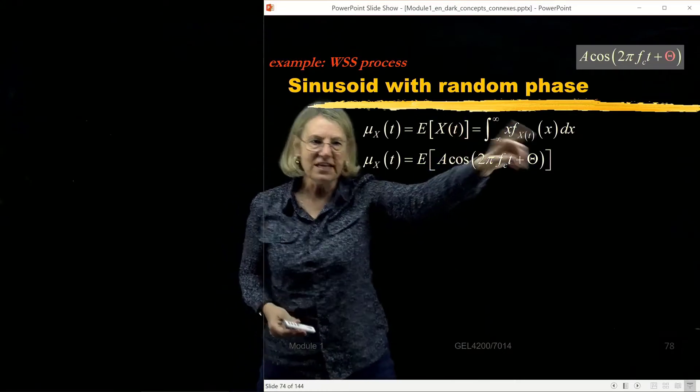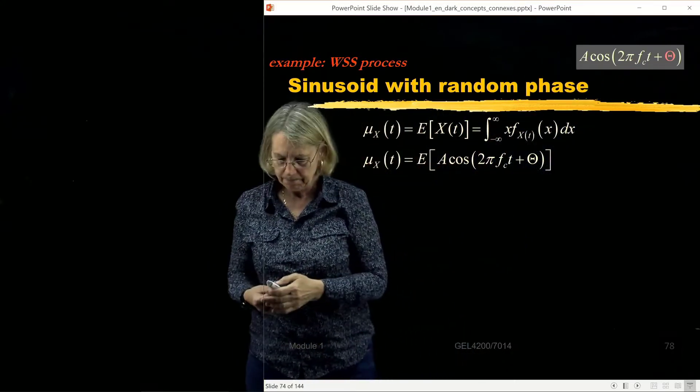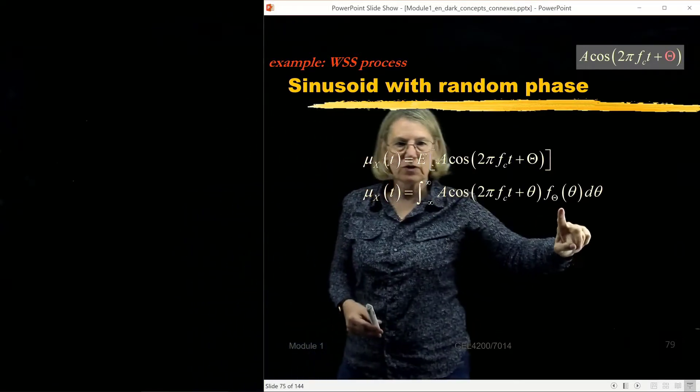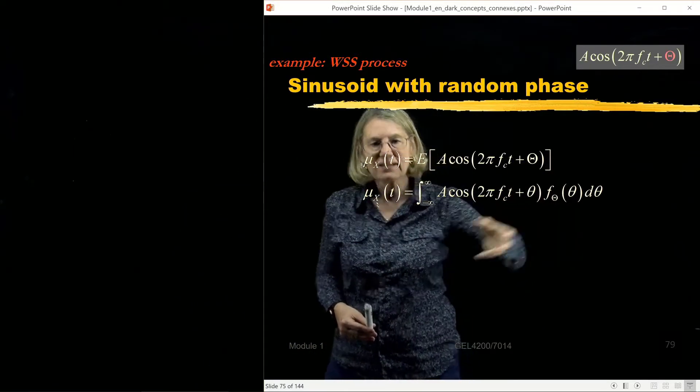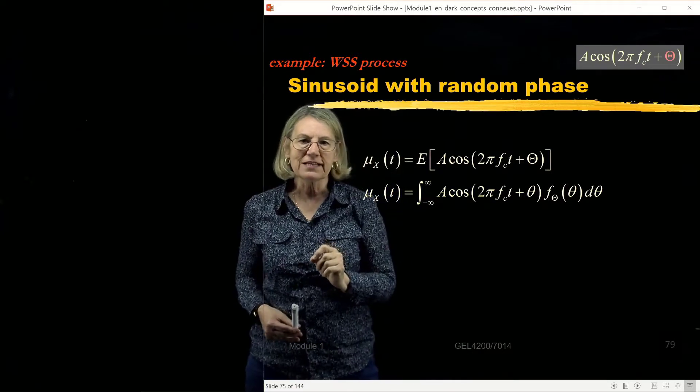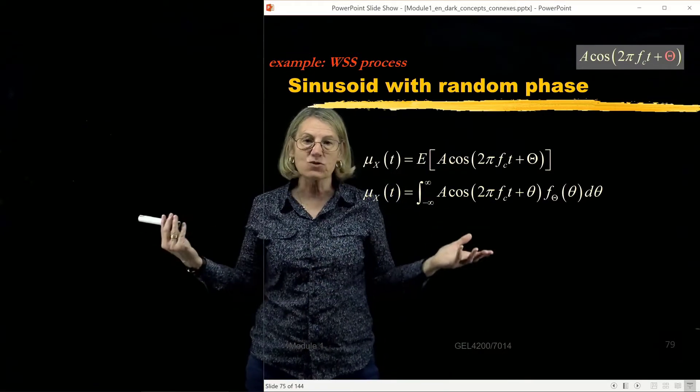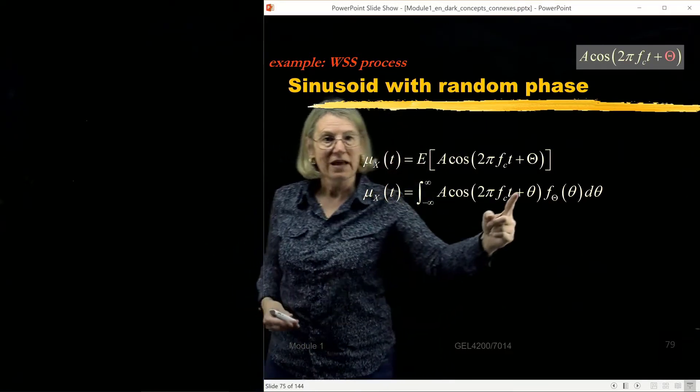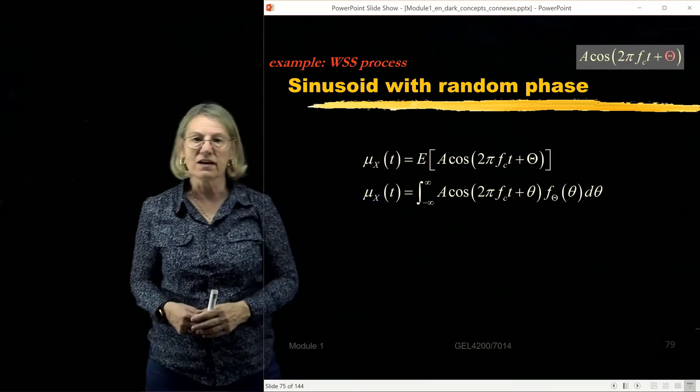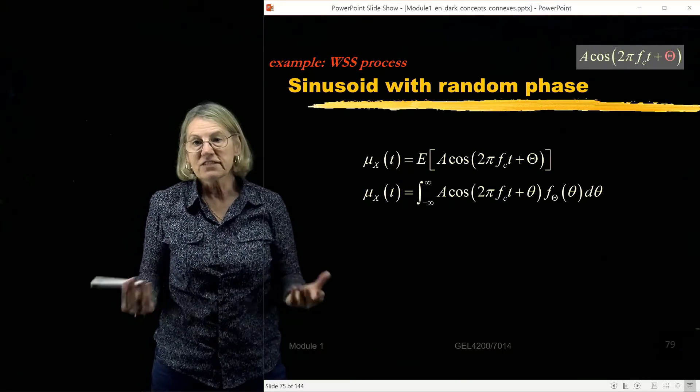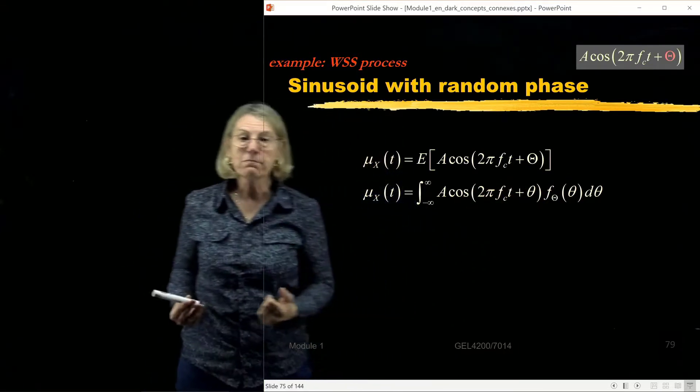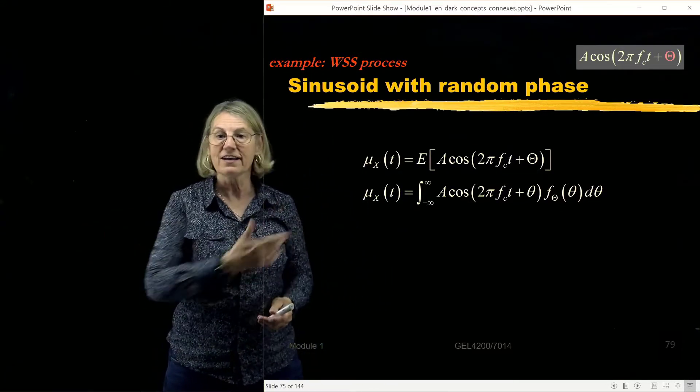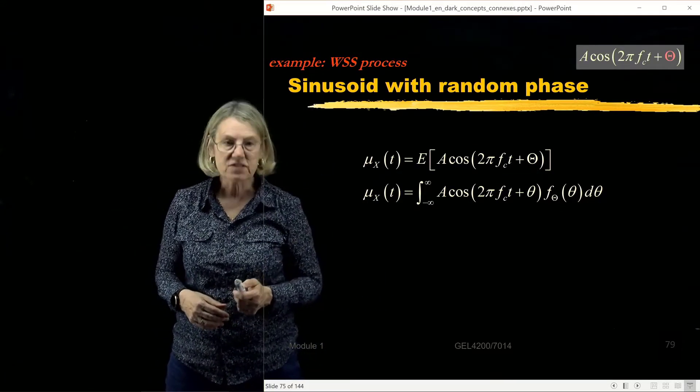So I put in right away that this is the random process. So I replace x with this function in time and I'm going to take this function and I have to weight it by the probability density function. So what is it that's random in this random process? Well there's only one part of it that's random and that's this theta, this phase offset. So I have a density for theta. I specify what that density is, then I can find the average value of this function of time.